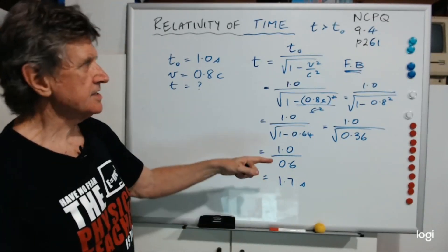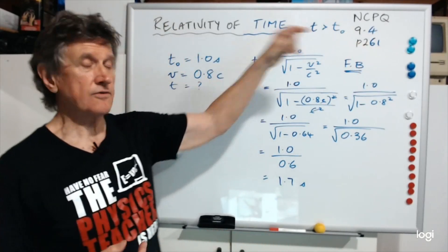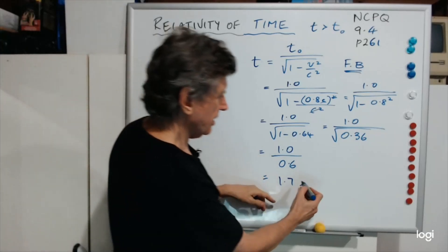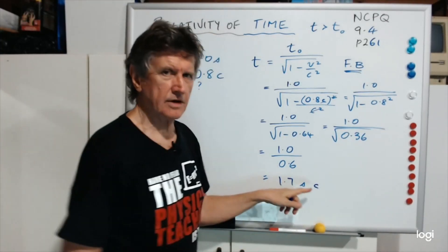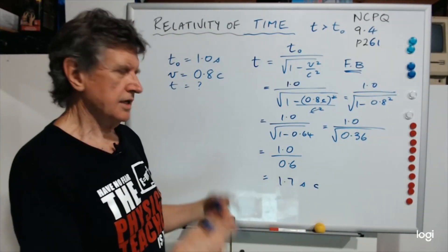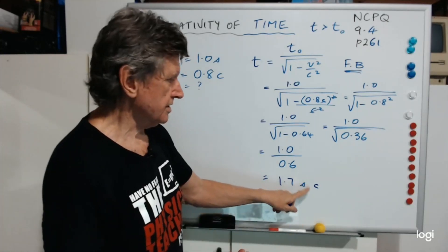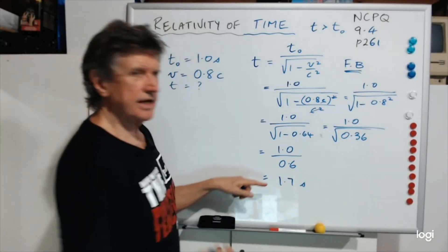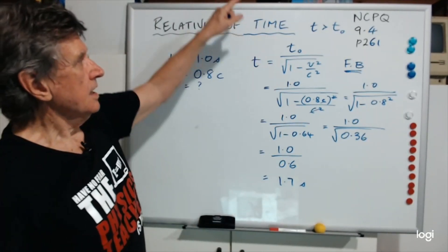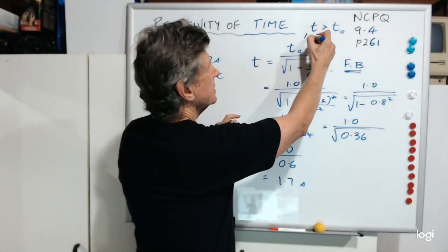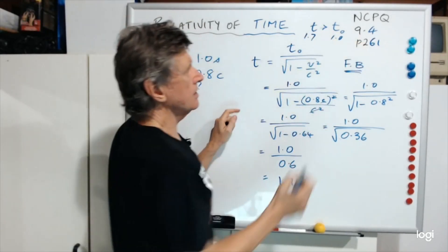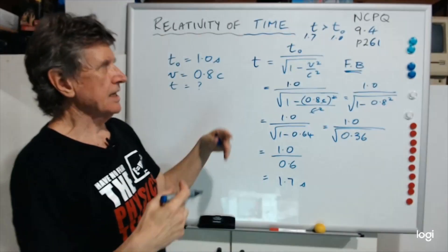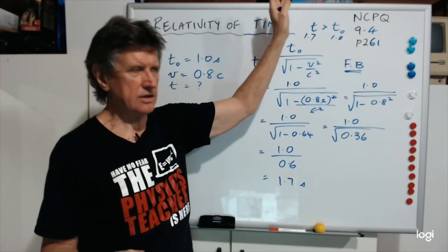In the textbook on about page 263 or 264, I've got this as a worked example, but for some reason I put a C in there instead of an S — I think it's been corrected in the new version, but the one you have is probably a C, so just cross that out and put 'seconds' in there. That makes sense: T is 1.7 seconds and T0 is 1.0 second, so T is greater than T0 — that confirms the idea.